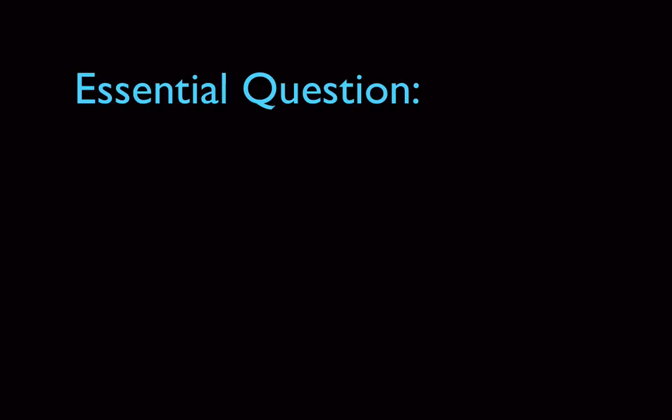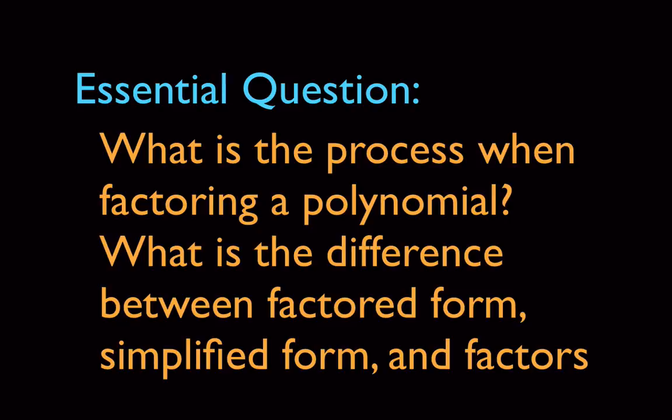I want you guys to think about the essential question — what is it that we're supposed to learn from the lesson today? First of all, what is the process when factoring a polynomial? What are the steps we're going to do, and what should our answer look like? What is the difference between factored form, simplified form, and factors in general? This is something we've already been talking about in class. I want to make sure you guys are starting to build this vocabulary on your own as well.